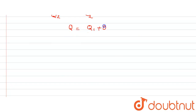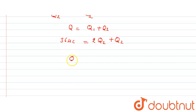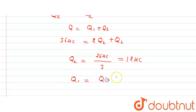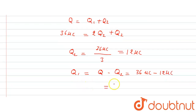Total charge Q = Q1 + Q2 = 36 microcoulomb. Since Q1 = 2 × Q2, we get 2Q2 + Q2 = 36 microcoulomb, so Q2 = 36/3 = 12 microcoulomb. Then Q1 = Q − Q2 = 36 − 12 = 24 microcoulomb, which equals 24 × 10⁻⁶ coulomb.